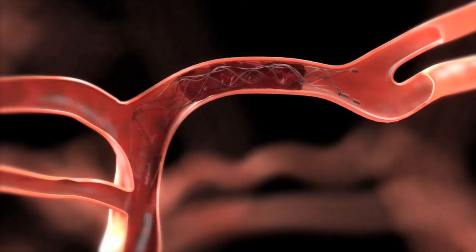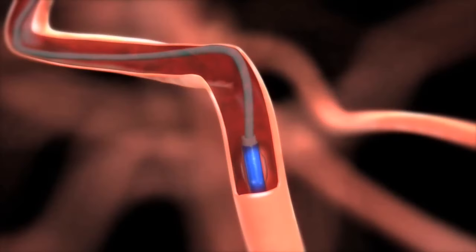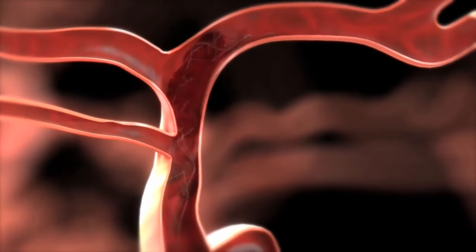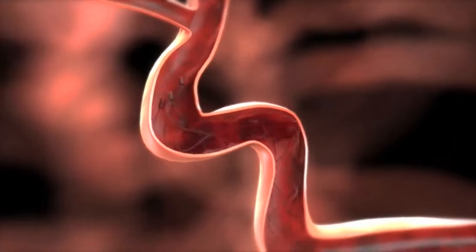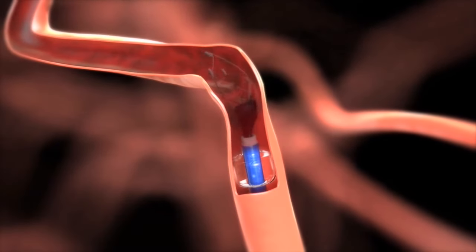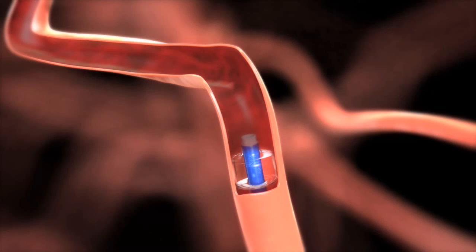we inflate a balloon in the carotid artery in the neck, which arrests flow, and then we pull back the stent retriever device with the clot entangled inside it into that balloon catheter. The purpose of inflating the balloon in the carotid artery in the neck is to reverse flow from the brain arteries and into the catheter out of the patient's body.